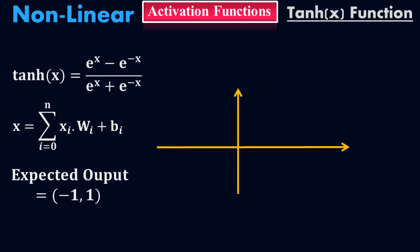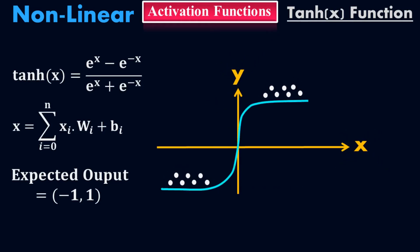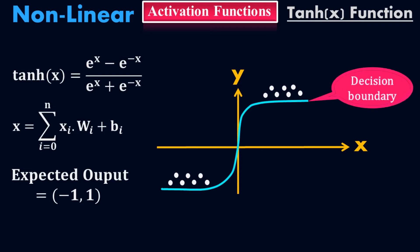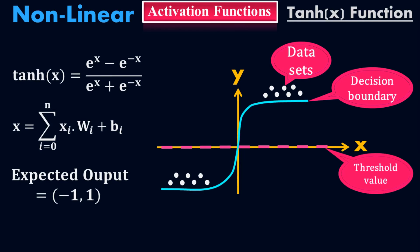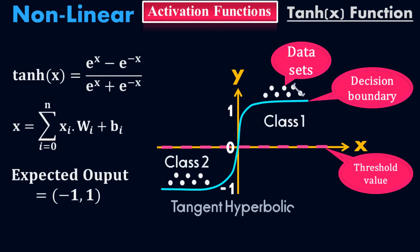Now let me build the graph of the tangent hyperbolic function. These are the data points. This is the decision boundary where we have the data sets. This is the threshold value which is 0, and the output ranges from negative 1 to positive 1. We can say that this is class 1 and this is class 2.